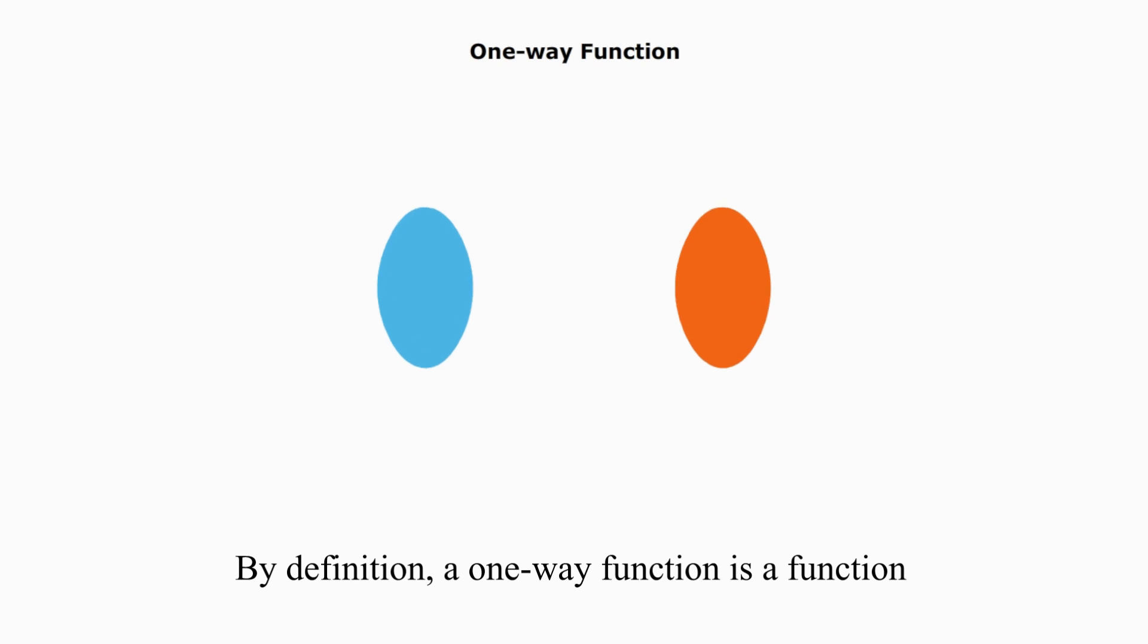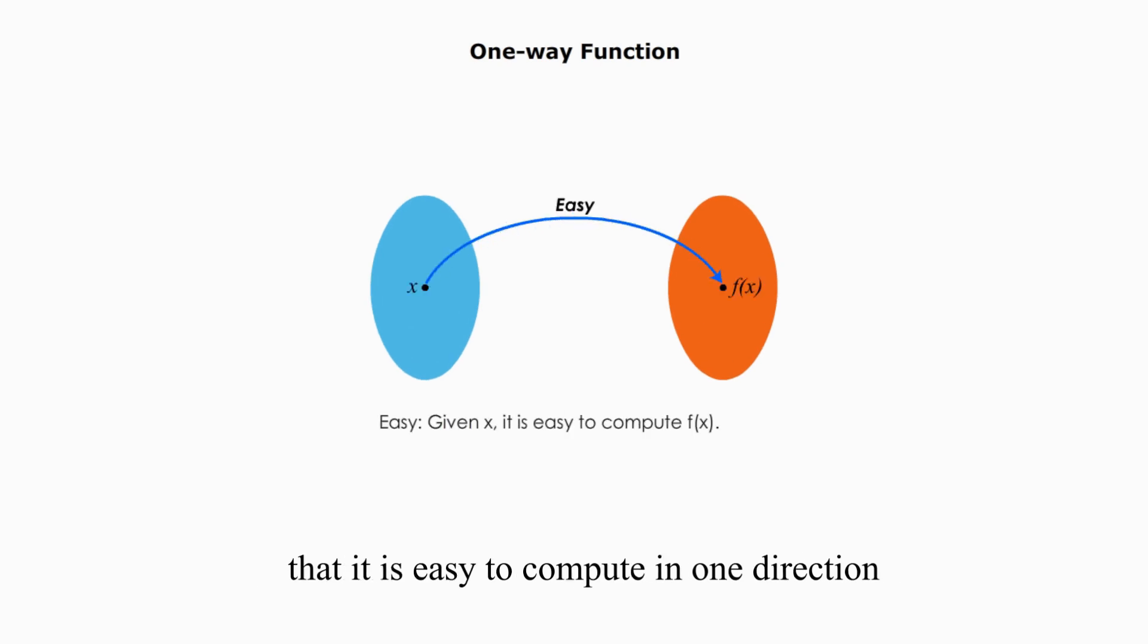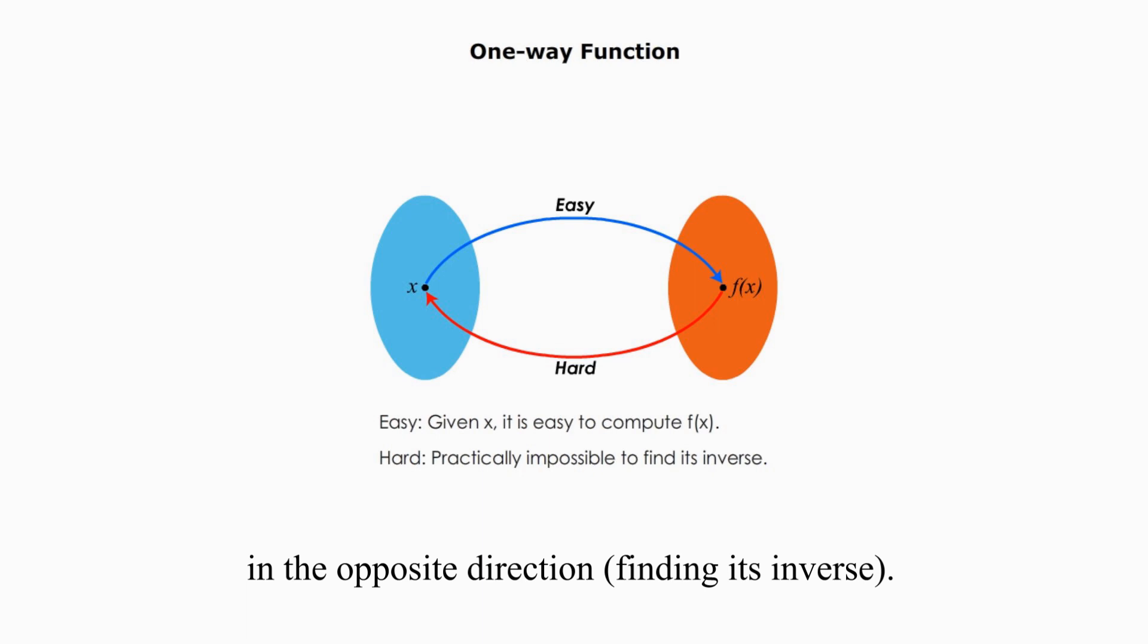By definition, one-way function is a function that is easy to compute in one direction, but is extremely difficult to compute in the opposite direction, or finding its inverse. In math, we say given x, it is easy to compute f(x), but is practically impossible to find its inverse.